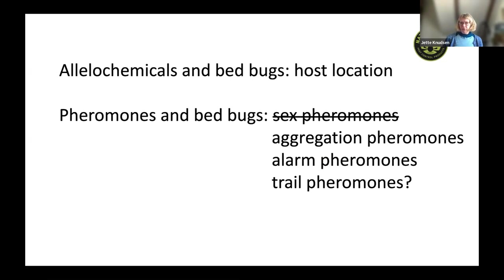How may we use chemical ecology in the battle against bed bugs? We have allelochemicals used by bed bugs for host location, as the host sends out chemicals detected by bed bugs. Within bed bugs, the most successful pheromones used in monitoring or mass trapping are usually sex pheromones, but these have not been identified in bed bugs — apparently they do not have any. However, they do have aggregation pheromones, alarm pheromones, and perhaps trail pheromones.